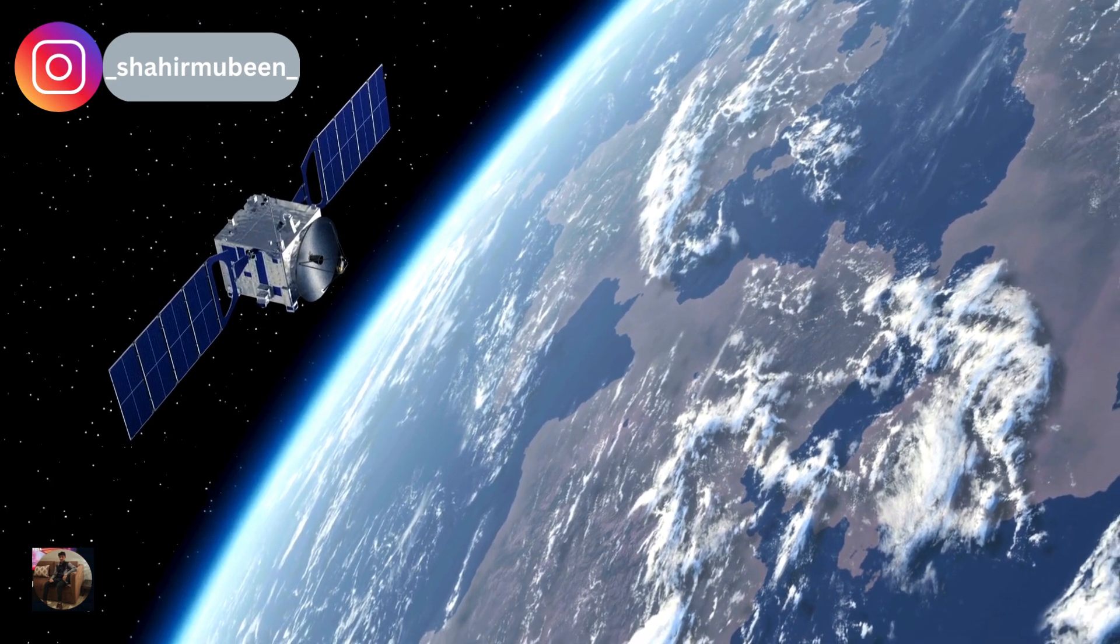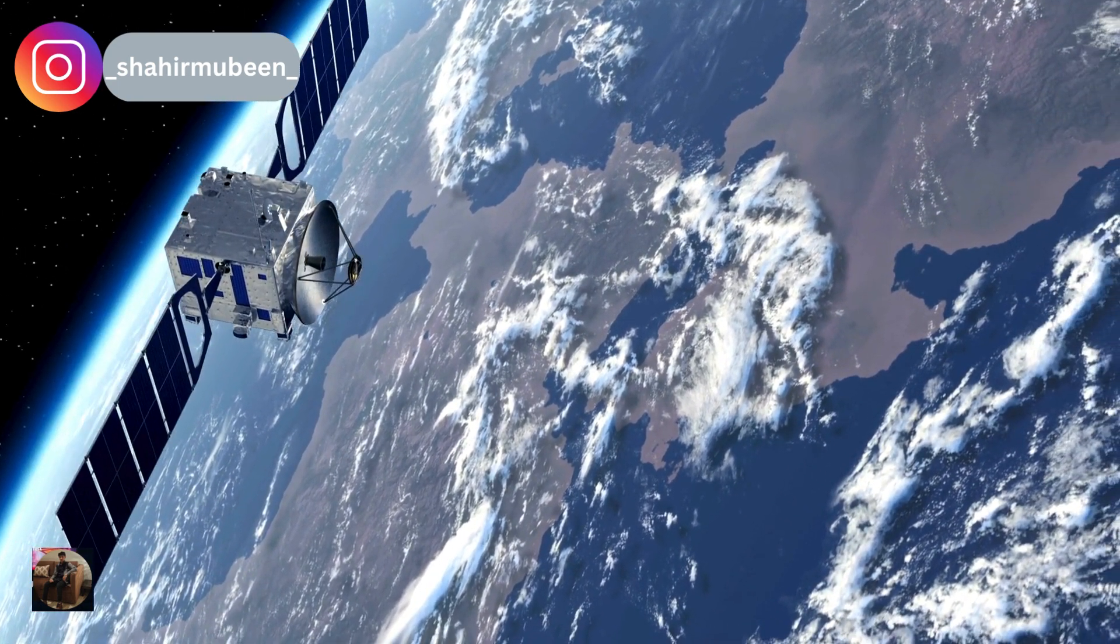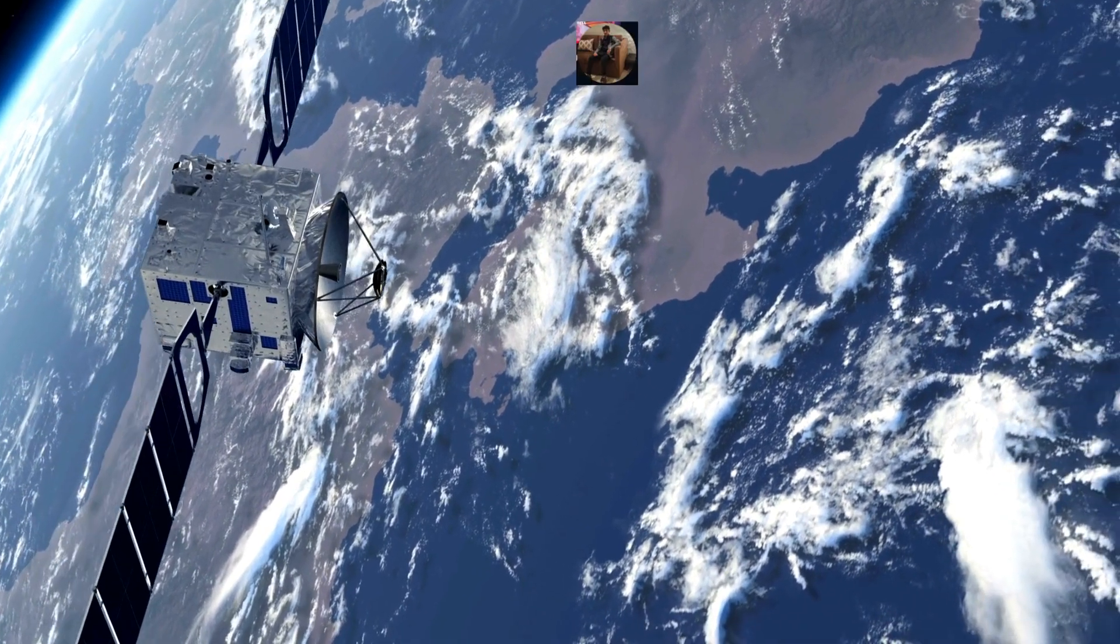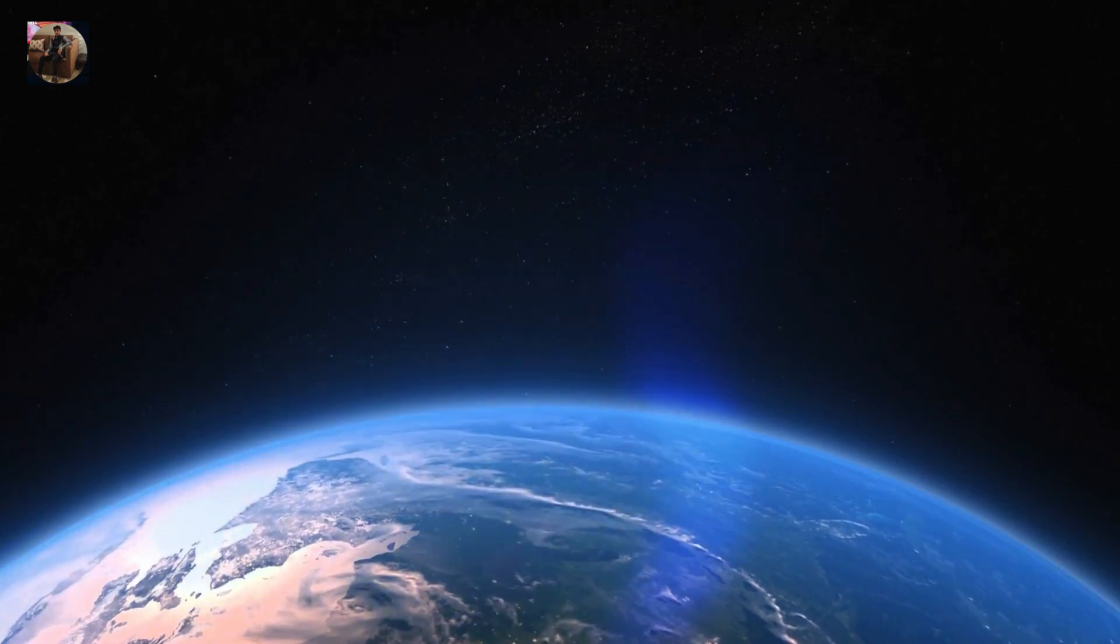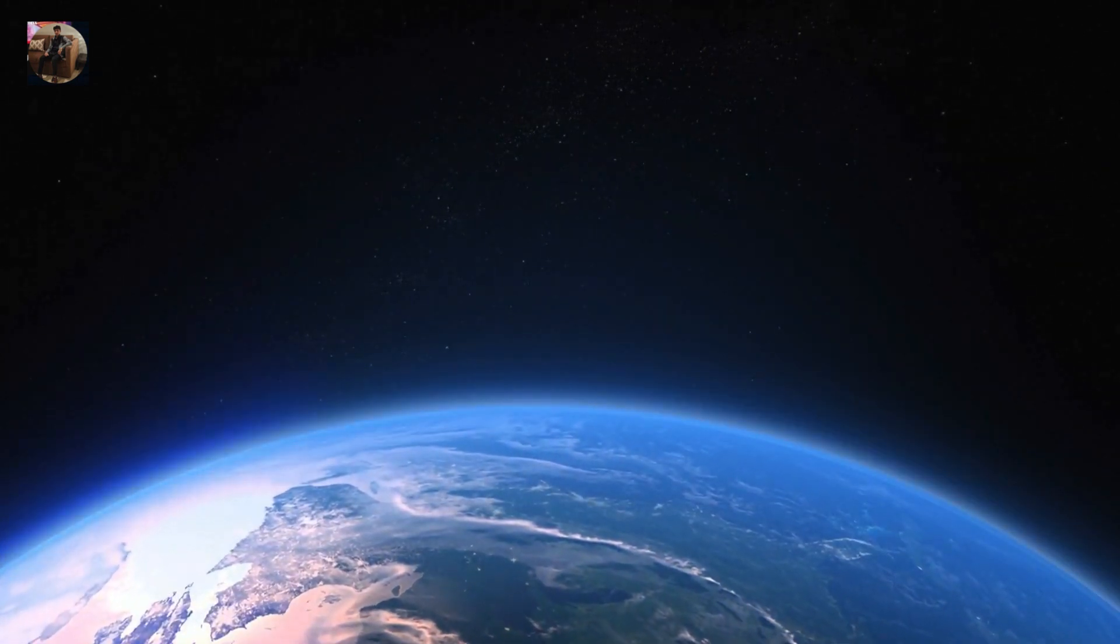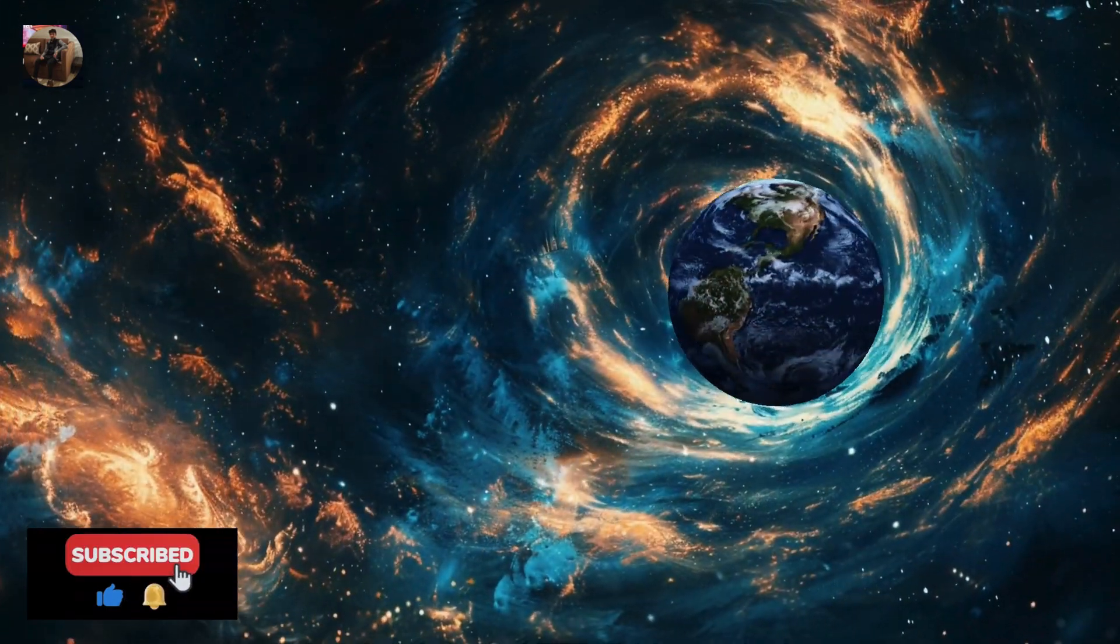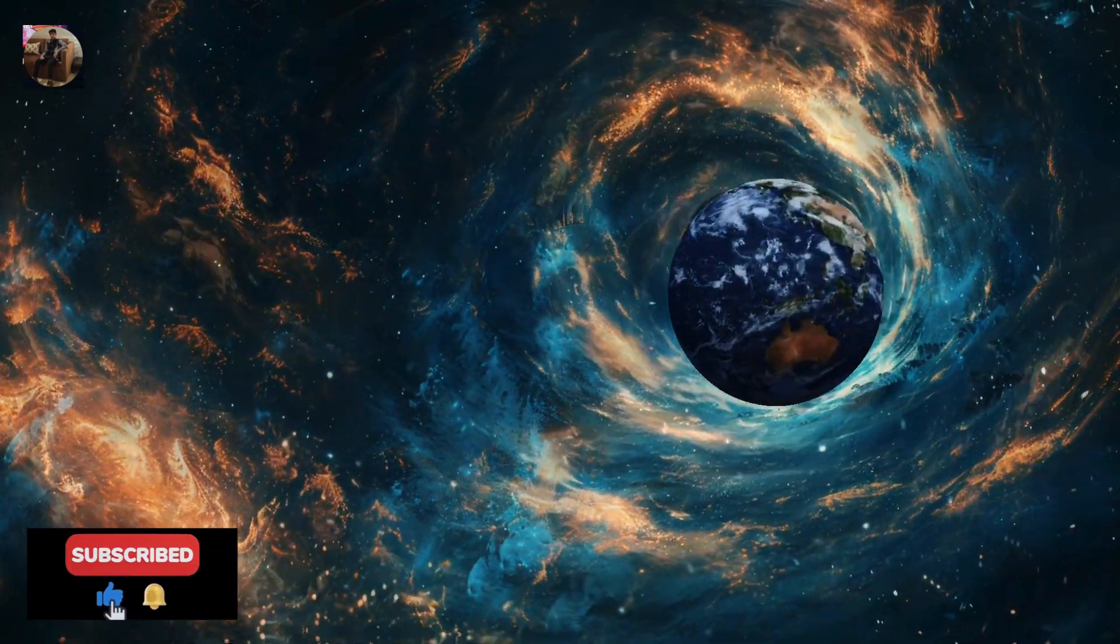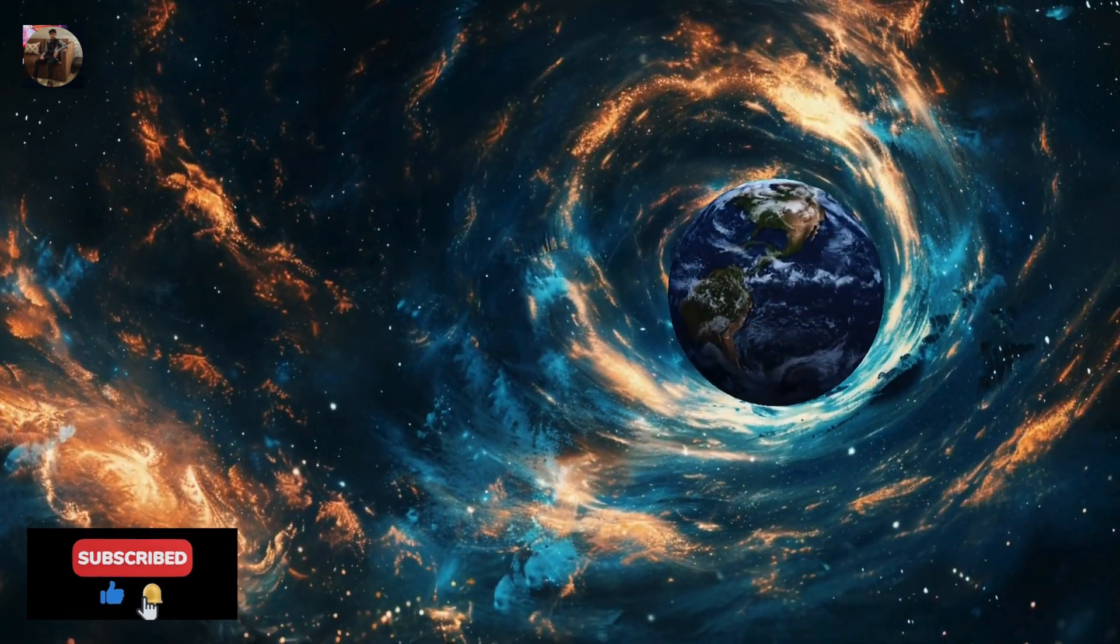The atmosphere is like Earth's invisible shield. It protects us from harmful solar radiation, regulates temperature, and provides the air we breathe. Without it, life as we know it wouldn't exist. Think about it: the atmosphere keeps Earth warm enough to support life but not too hot. It's like a cozy blanket that traps just the right amount of heat.